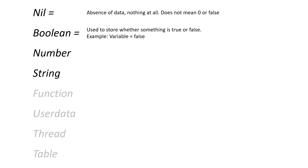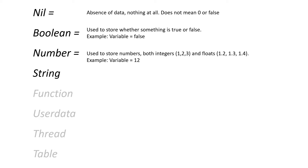Next up we have booleans. A boolean variable can be either true or false. An example would be a variable that keeps track of whether or not the player is able to jump. Then we have number variables that can store any type of numbers, both integers like 1, 2, 3 and so on, as well as floating point numbers that have a decimal point.